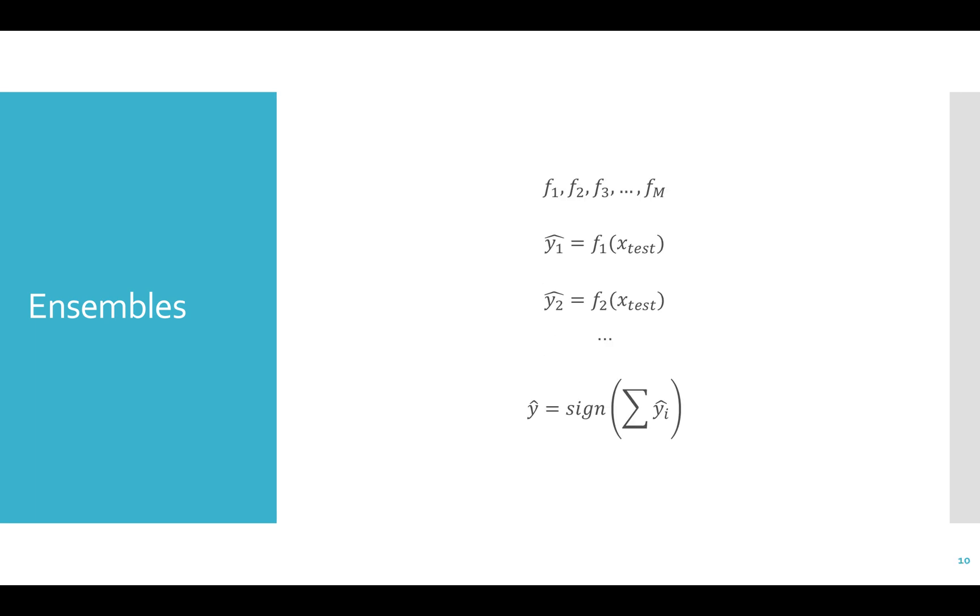Then, at the end, we just predict the majority class. So we sum up all the predictions and take the sign. Why do we use ensembles? It's unlikely that all classifiers will make the same mistake.